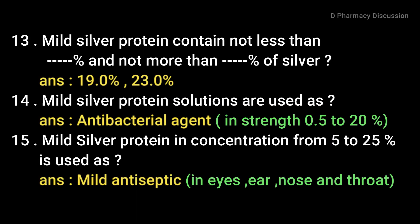Mild silver protein contains not less than 19% and not more than 23% of silver. Mild silver protein solutions are used as an antibacterial agent in strengths from 5 to 20%.